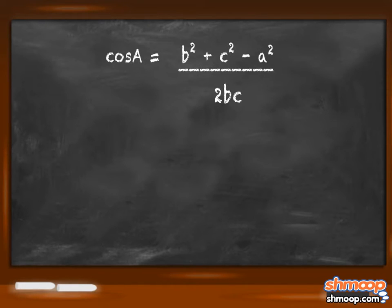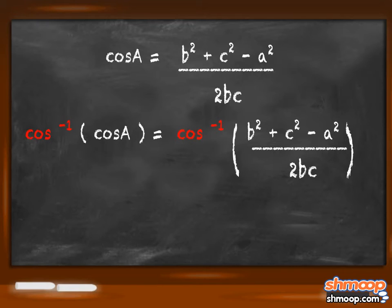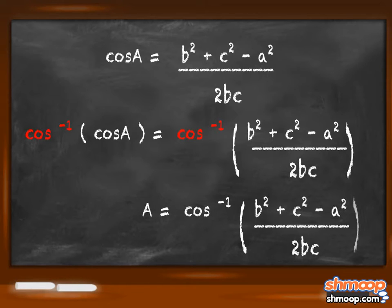To isolate the angle, we can take the cosine inverse of both sides, and when we do, we end up with the angle a equals the cosine inverse of b squared plus c squared minus a squared all over 2bc.